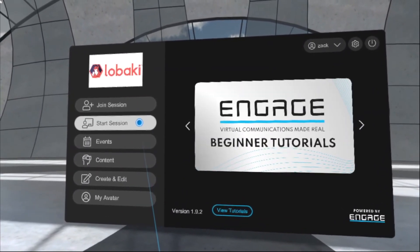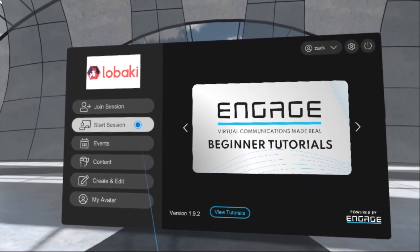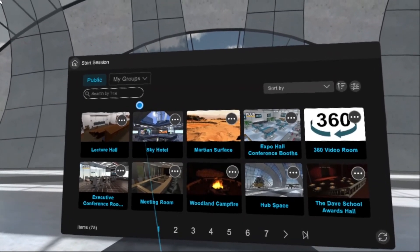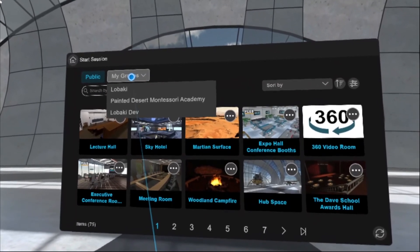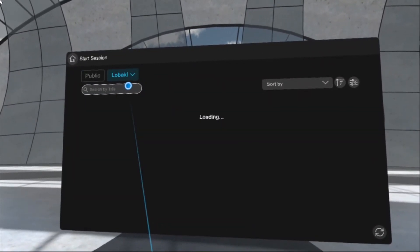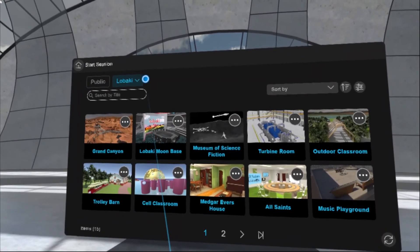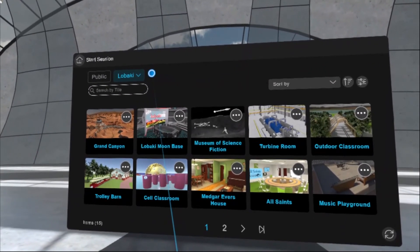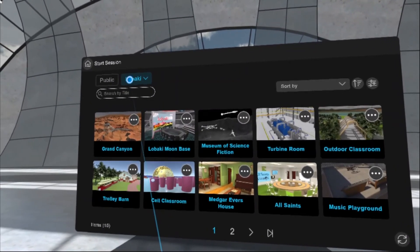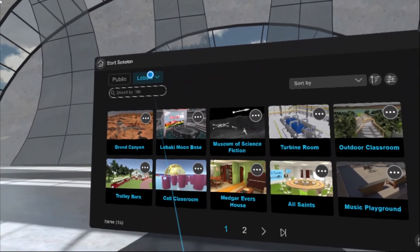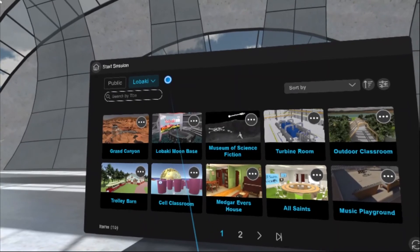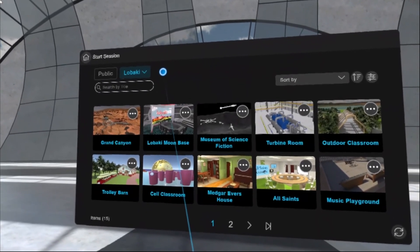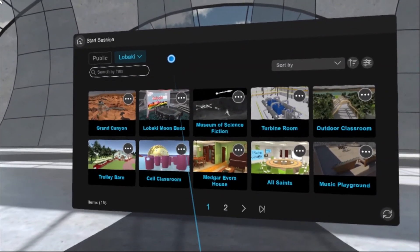We'll click this start session button over on the left side of our Engage home screen menu. Then we're going to go up to this tab up here at the top left. Yours might not say Labaki, it'll probably say the name of the group or organization that you are working with, but regardless of what it says, this tab up here next to the public tab will be where all of the custom locations that we've developed will live that you'll have access to.